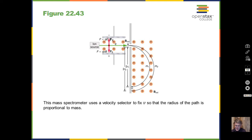We can calculate the radius r — and this radius will be different for different mass particles, which is why it's called a mass spectrometer. Different masses land at different points on the detector. One tricky point: after you calculate r from qvB = mv²/r, you need to double it to get the diameter of the semicircle. Keep reading and practicing!